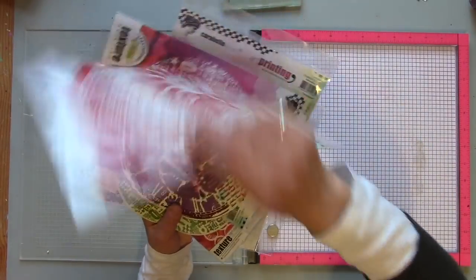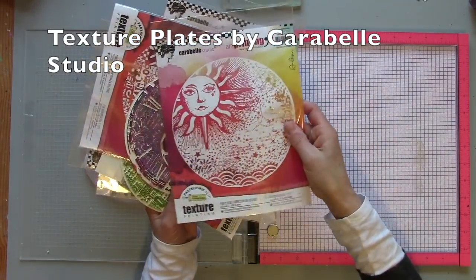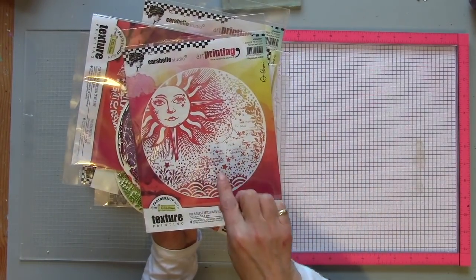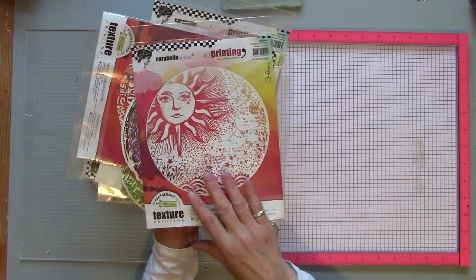I'm going to be using these texture plates by Carabell Studio. I've got a variety here. These have been designed so that the text is printed the correct way when you pull a print off.